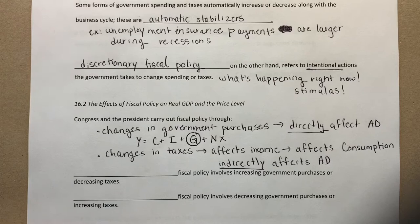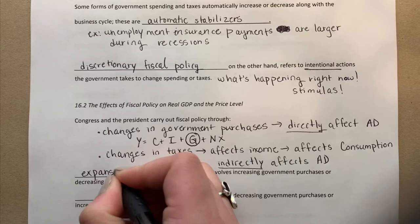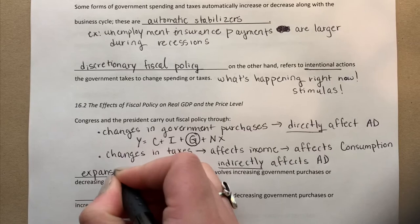Now let's talk about the two sides of fiscal policy. Just like we had expansionary monetary policy and contractionary monetary policy, we have the same thing for fiscal policy. Expansionary fiscal policy involves increasing government purchases or decreasing taxes.